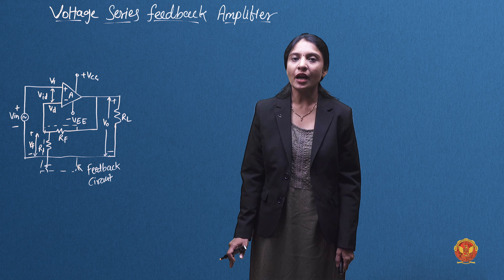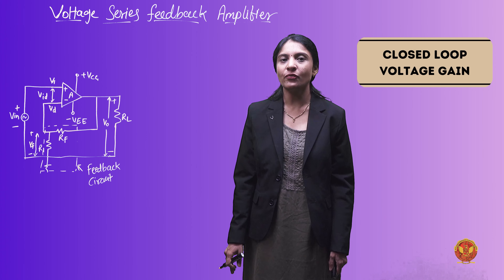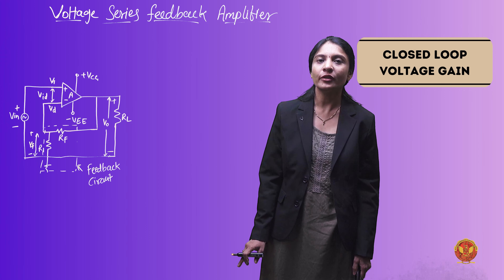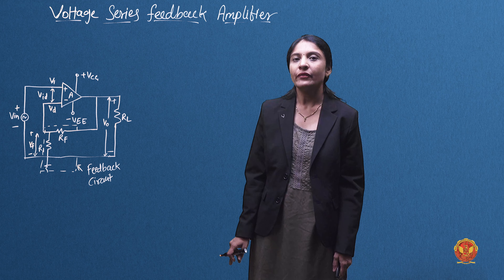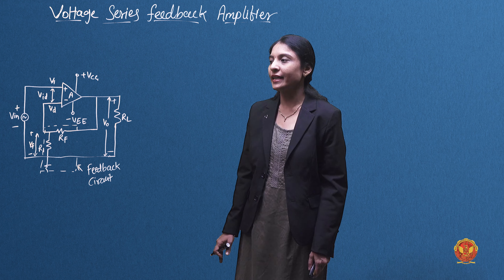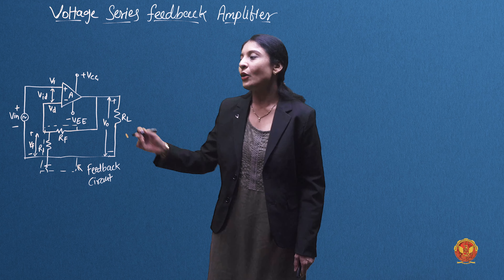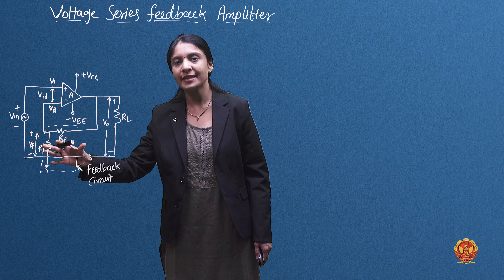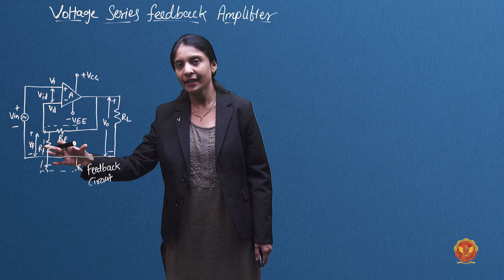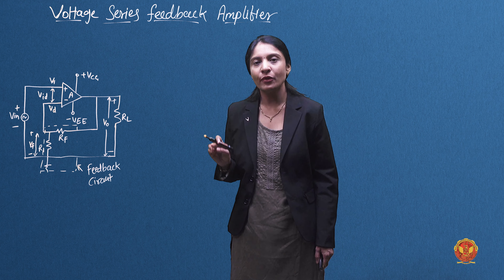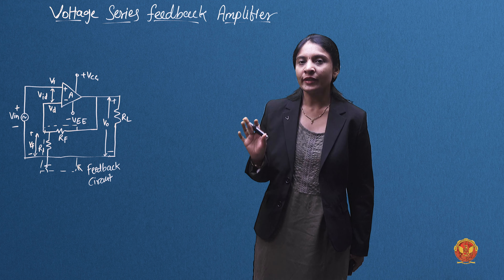For the Voltage Series Feedback Amplifier, we have been given different parameters. The op-amp has its non-inverting terminal connected to the input, and the feedback circuit is composed of R1 and RF. The closed-loop voltage gain of the Voltage Series Feedback Amplifier is denoted as AF.